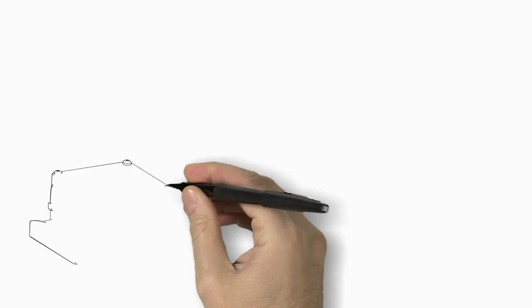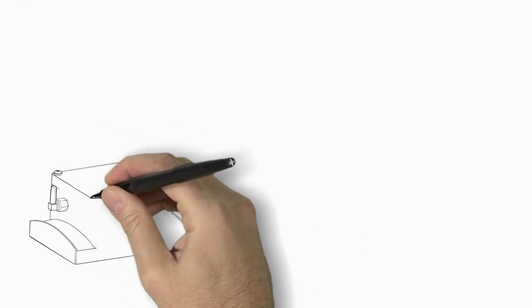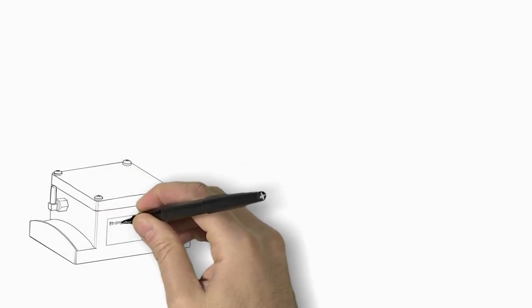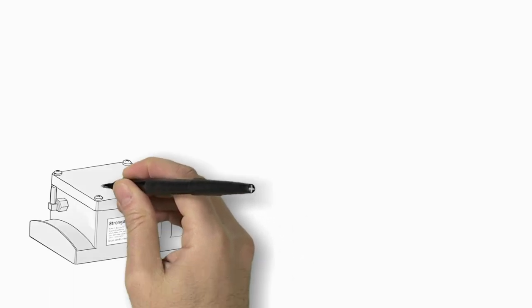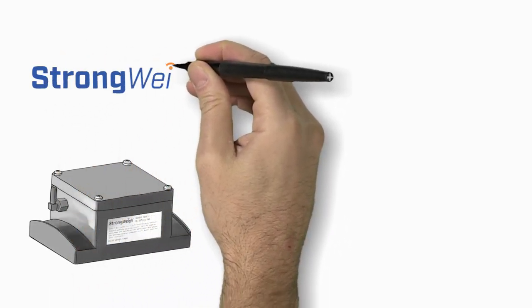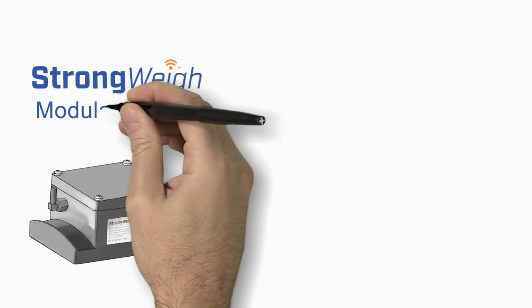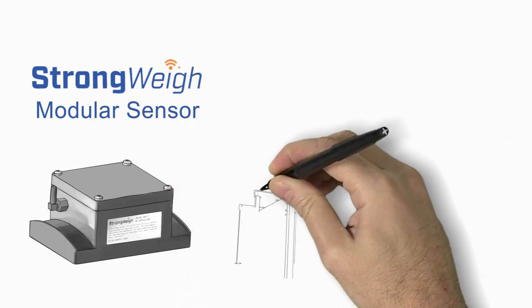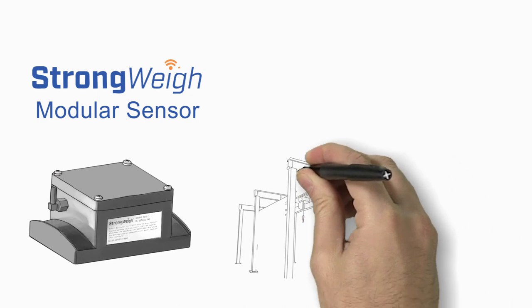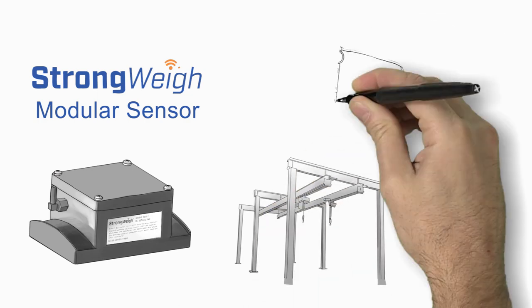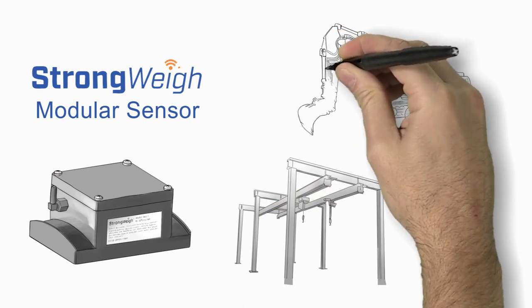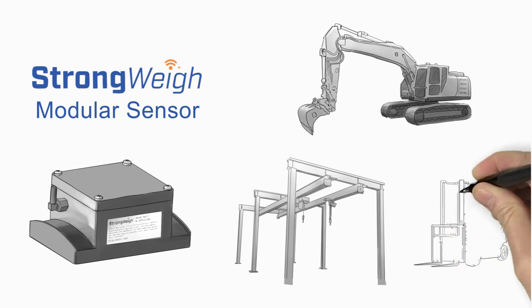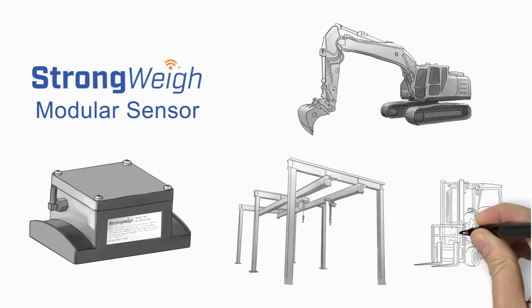What makes this accuracy possible is the development of our proprietary Strongway modular sensor and advanced new load measurement technology with multiple industrial applications beyond hauling, including weight management and overload prevention in heavy equipment like cranes, forklifts, and excavators. The sensor can also be applied to other applications like inventory management and bridge load monitoring.